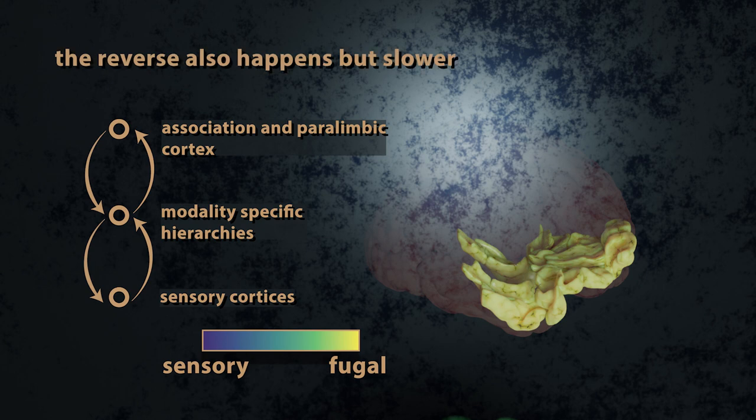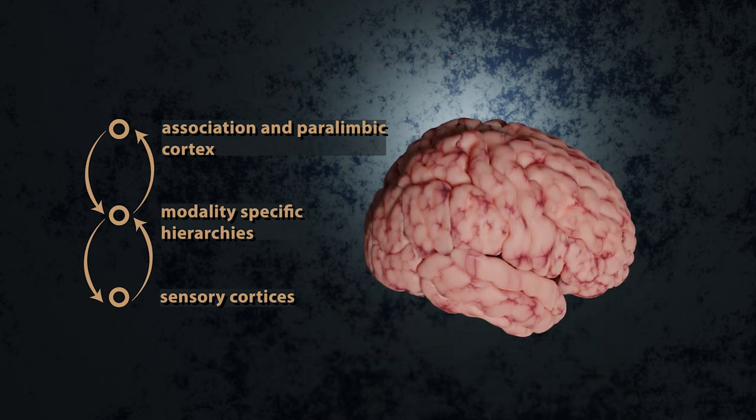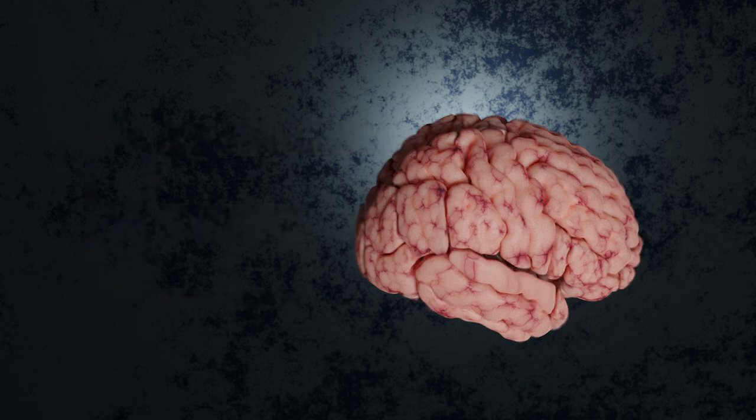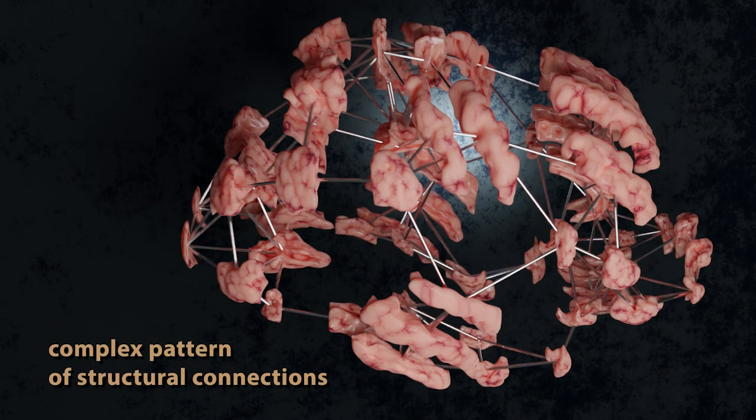Signals traverse down this hierarchy as well, and this interplay between bottom-up and top-down signaling is thought to underpin our capacity to make predictions about our environment, as well as to complete goal-directed action. This hierarchy is thought to govern the complex pattern of structural connections that course throughout the brain.